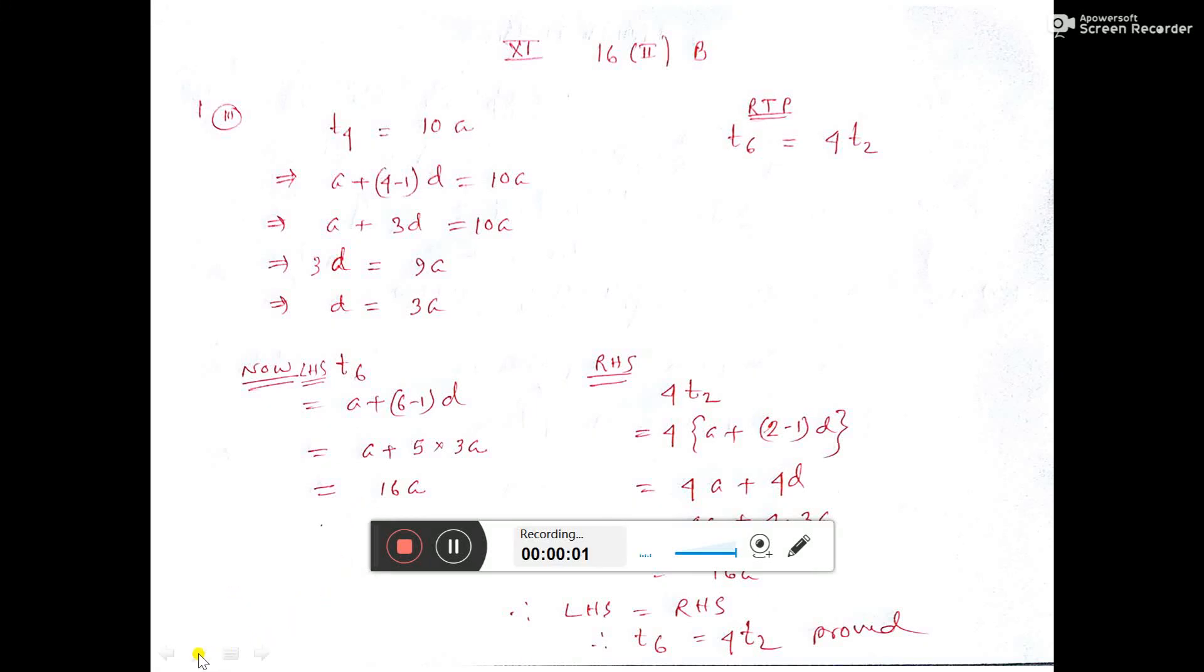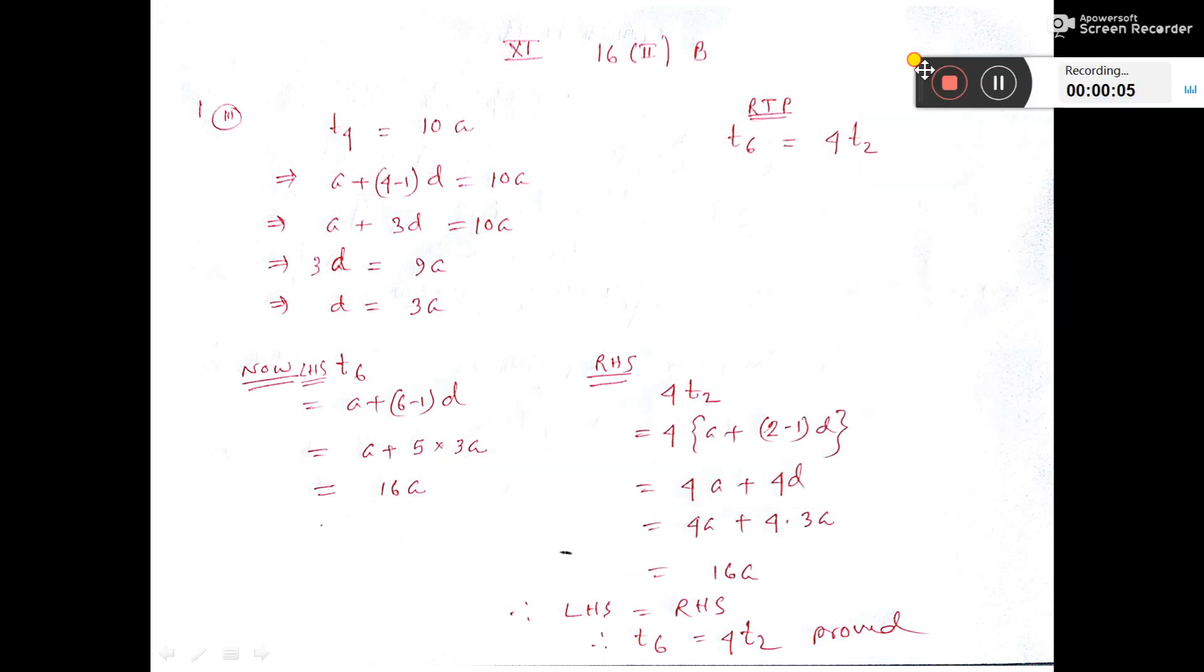The fourth term of an AP is given as 10 times the first term. Let the first term be a. Then the fourth term equals 10 times the first term, which is 10a. Using the fourth term formula a plus 4 minus 1 into d, we can find the value of d.